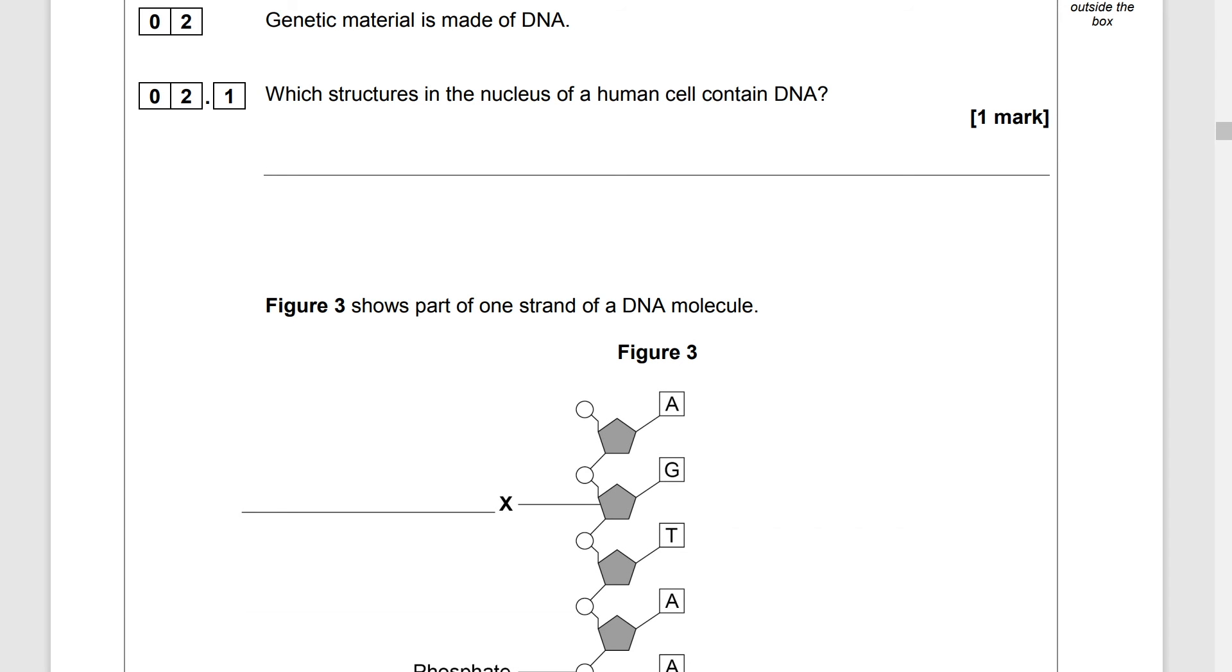Question 2. Genetic material is made of DNA which structures in the nucleus of a human cell contain DNA? Chromosomes.